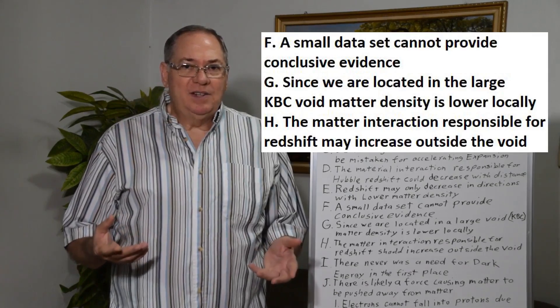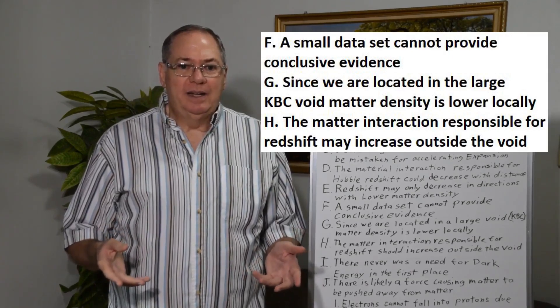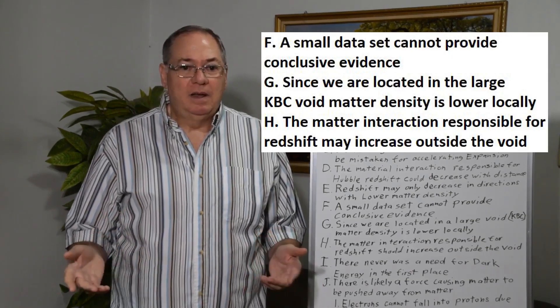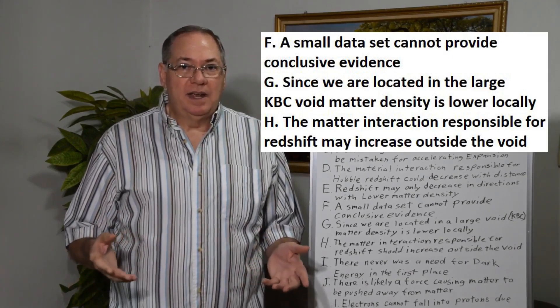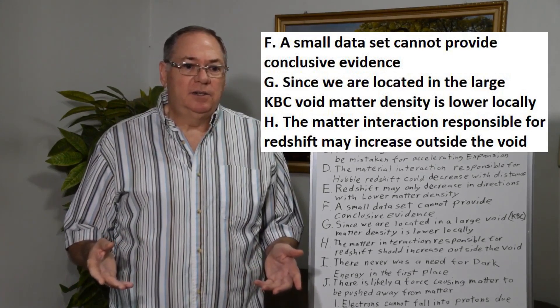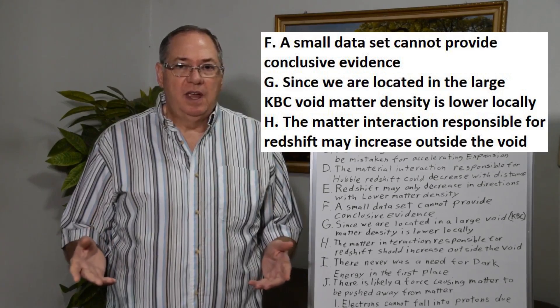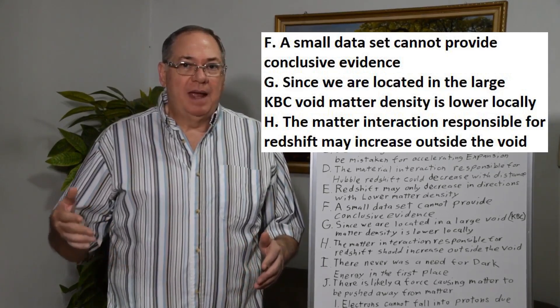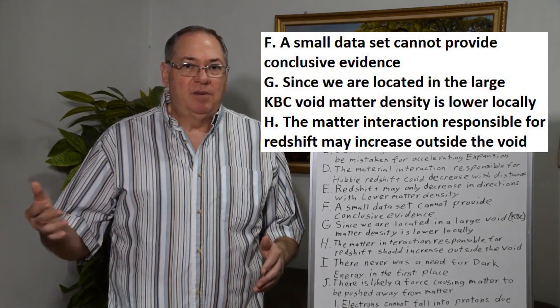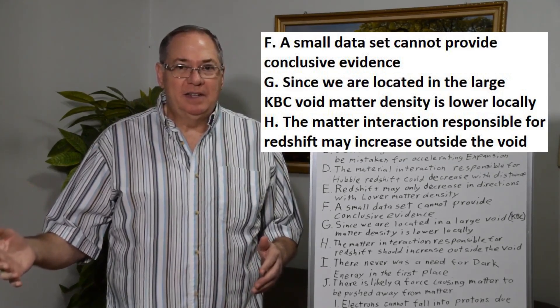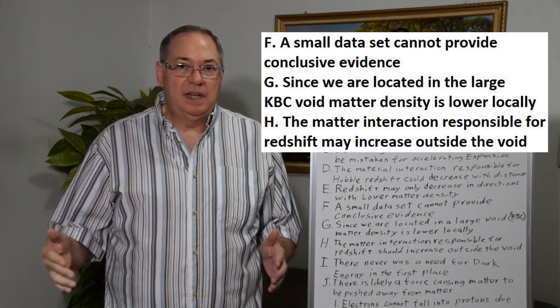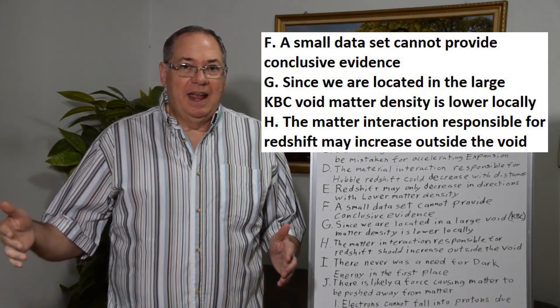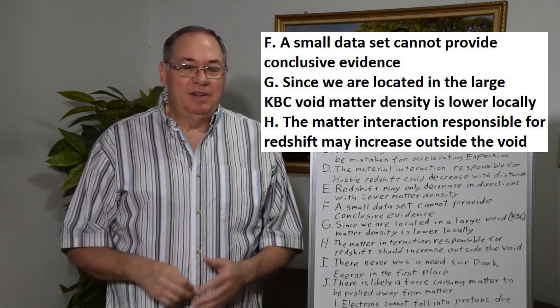And then since we're located in a large void called the KBC void, this void has a diameter of 2 billion light years, so it's huge. But that would mean that light coming from outside the void is going through an area of increased matter density, so we would expect to see an increasing redshift at further distance.